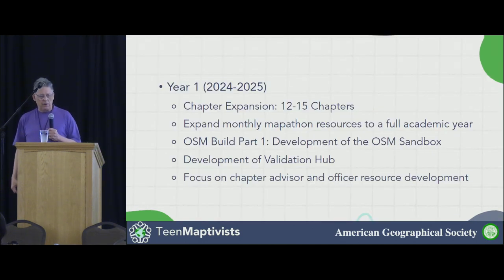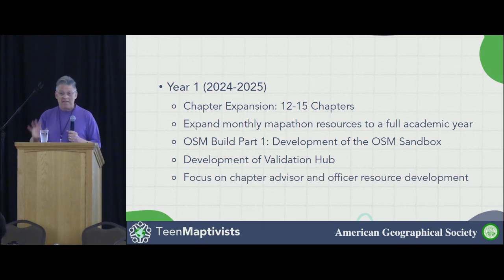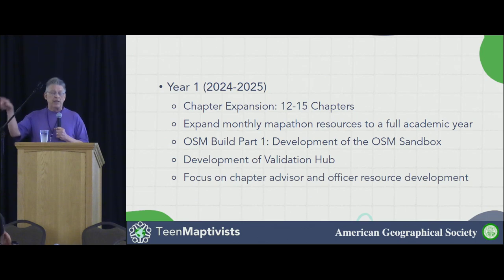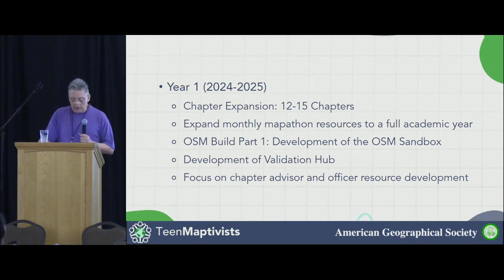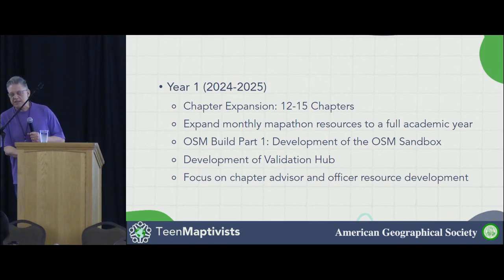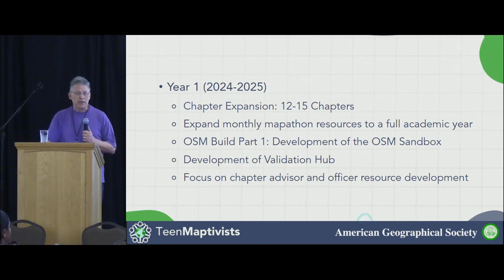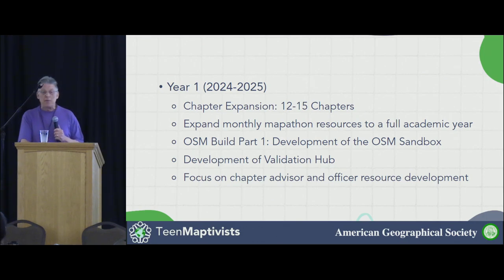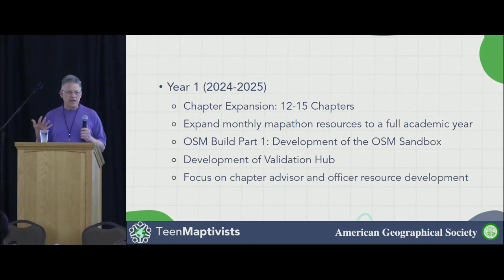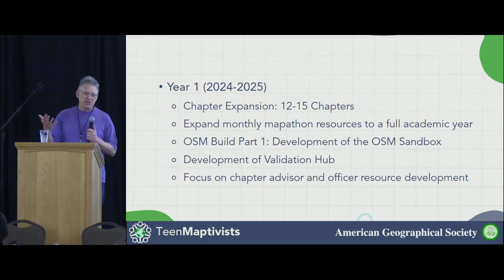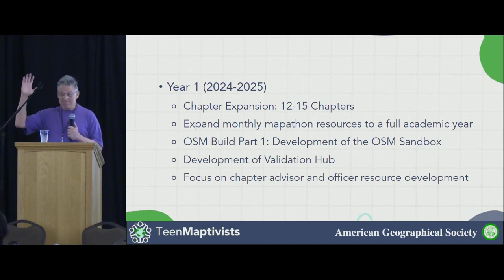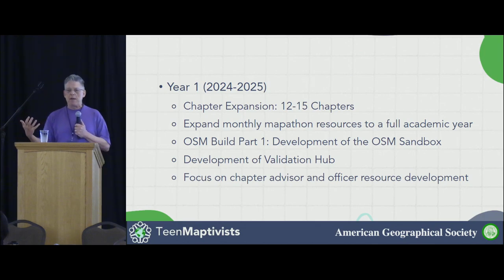Here are the plans for this first year. We've got five chapters now, and the idea is to have about 12 to 15 chapters by December and expand to a year-round program. We are eagerly awaiting the development of the OSM sandbox, which will be a nice addition to the tools we're using. We've also gotten a lot of mentorship and contributions from the Youth Mappers Validation Hub — it's been a really nice relationship because high school students naturally look up to college students as closer peers, and having a Youth Mapper giving feedback to high school students is a big plus.